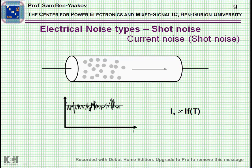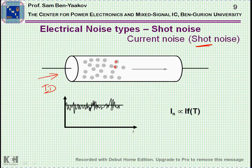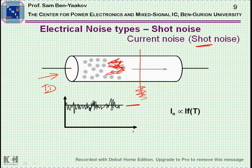Another type of noise is shot noise — named after the scientist who discovered it, not related to shooting. It is associated with a DC current flowing through a conductor. Because charge carriers are thermally agitated, the current at any cross-section is not perfectly constant. This results in a DC component with noise superimposed on it — a current noise source superimposed on the DC part flowing through the conductor.